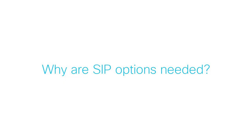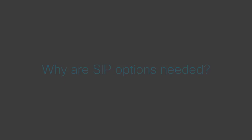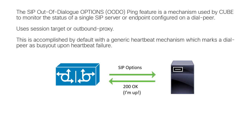So what are SIP options needed for? When you manage SIP voice services, you need to keep track of the status of the devices involved in call flows, and to know if they are available to handle calls, or if not, then take action. The SIP Out-of-Dialog Options (OODOP) feature is a mechanism used by CUBE to monitor the status of a single SIP server or endpoint configured on a dialpeer.